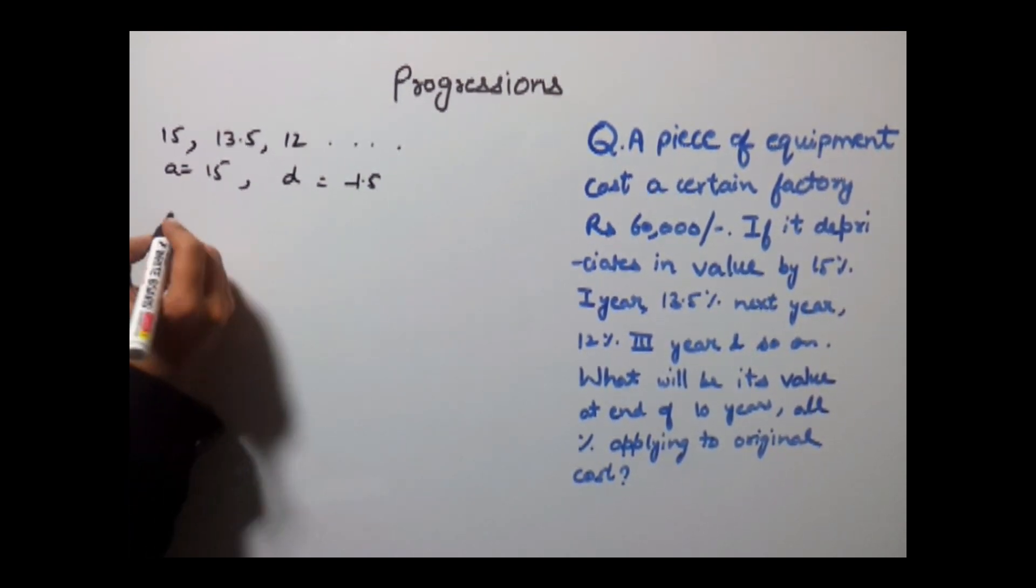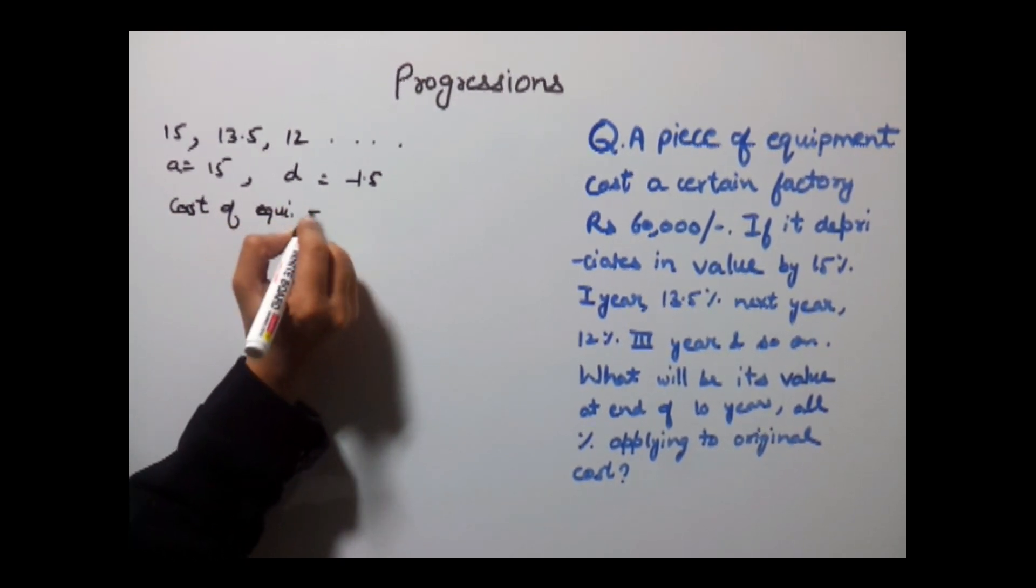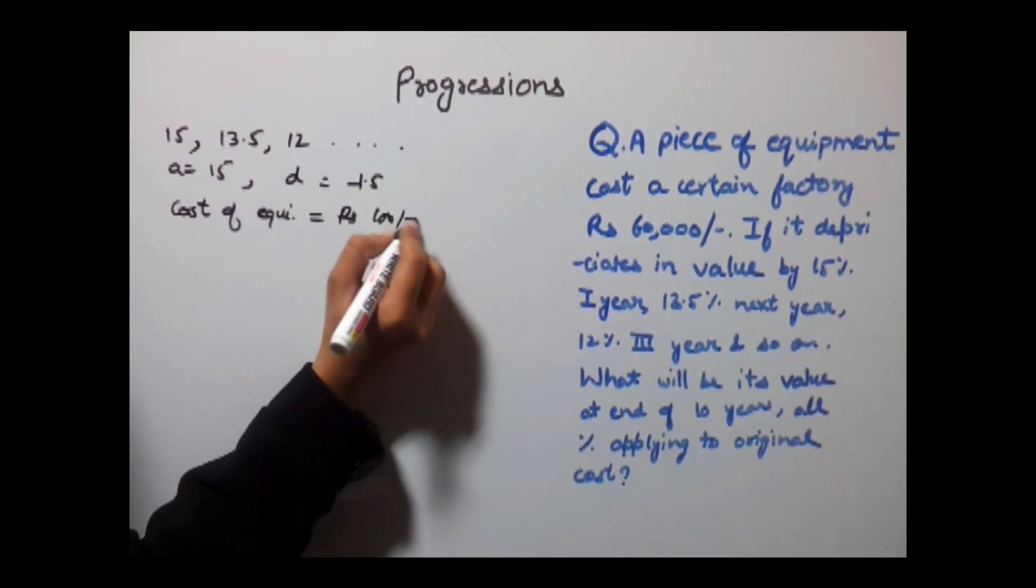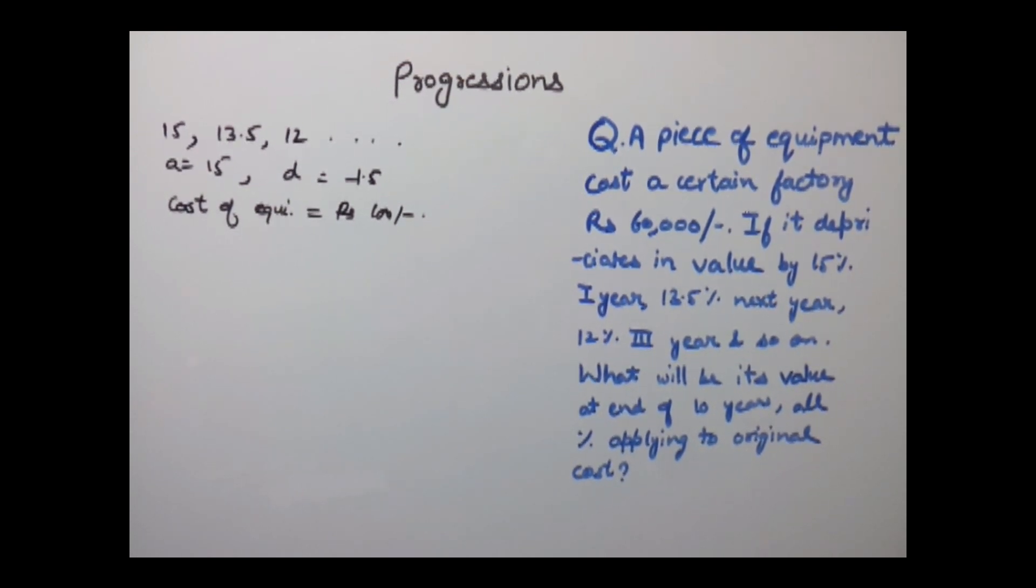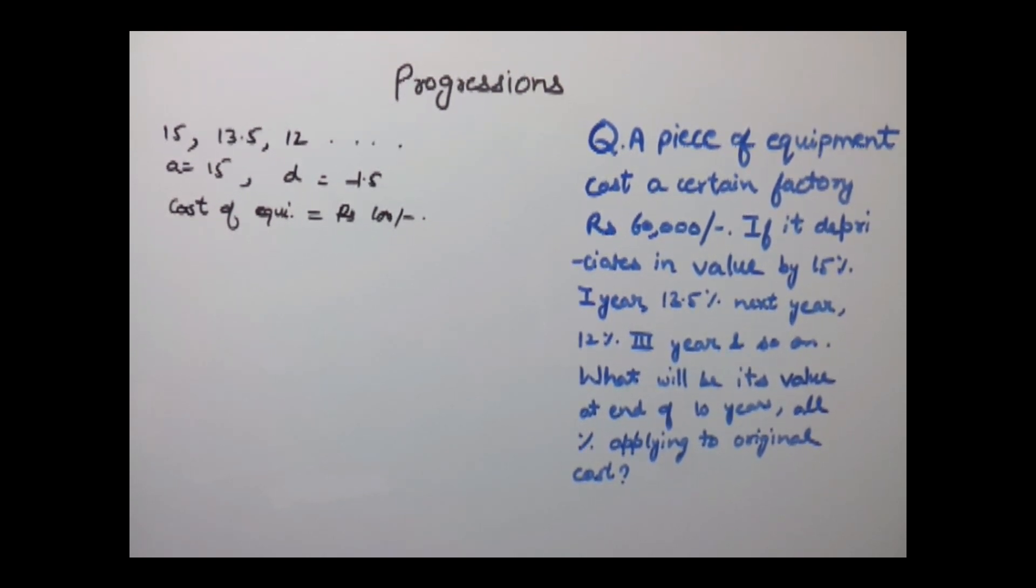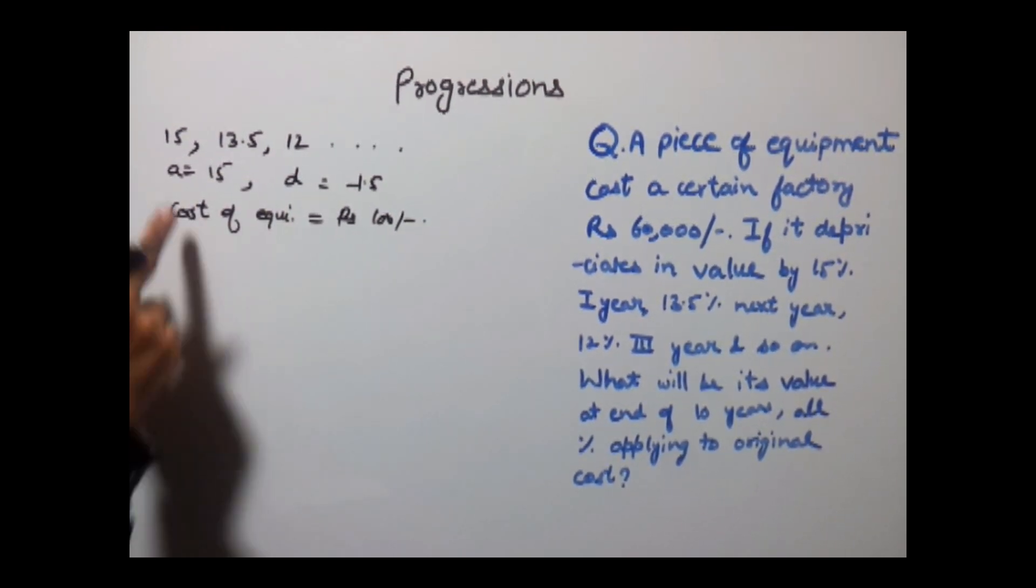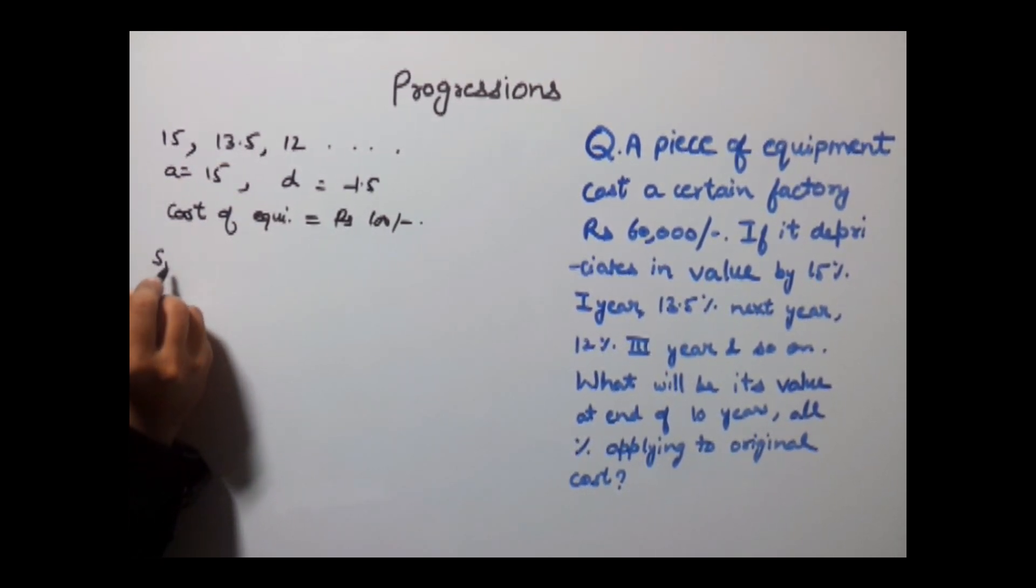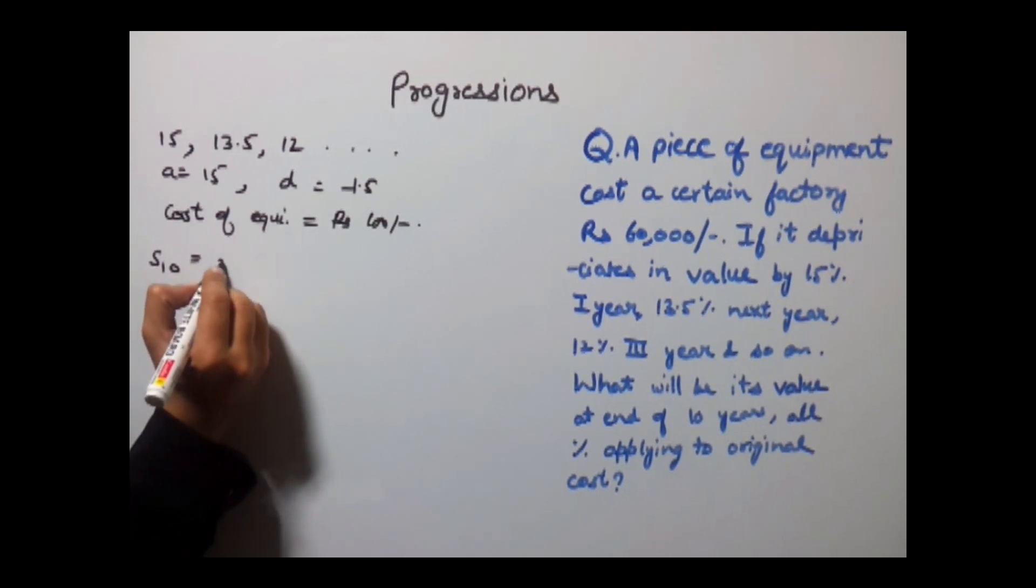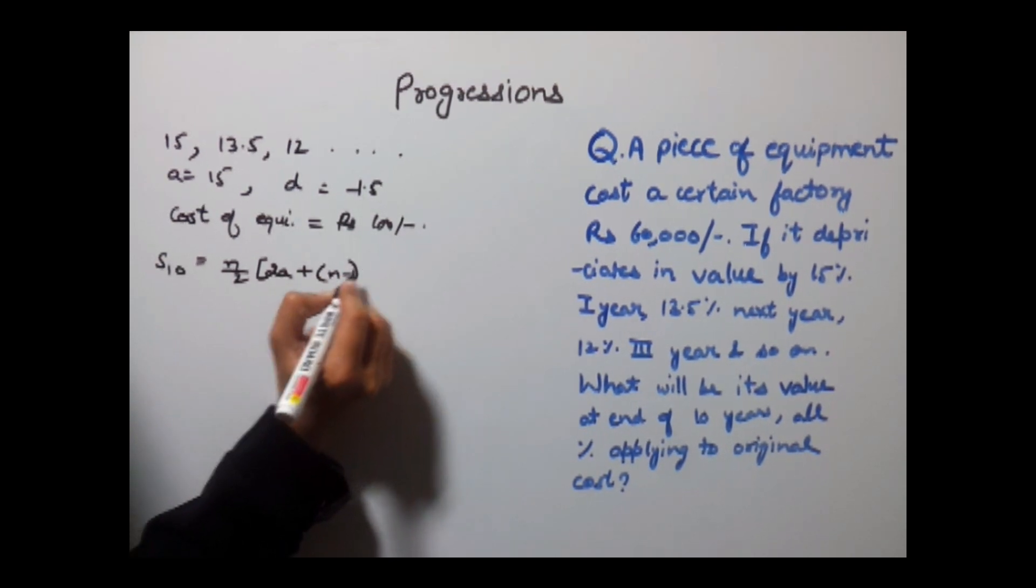Let us assume that the cost of that equipment is Rs 100. Now first we will find out how much deduction would be there on the equipment at the end of 10 years. For this we need to find the summation of all these terms. So S10 would be equal to N by 2 into 2A plus N minus 1 into D.